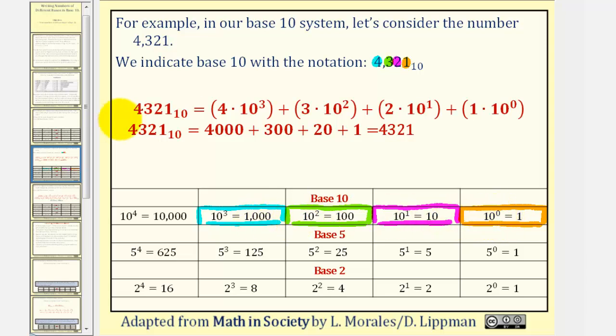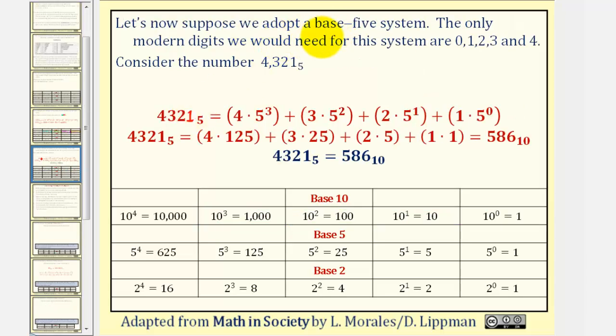So we could write 4,321 as 4 times 10 to the third, plus 3 times 10 squared, plus 2 times 10 to the first, plus 1 times 10 to the zero. If we expand this, we do get 4,321 in base 10. But now let's adopt a base 5 system.